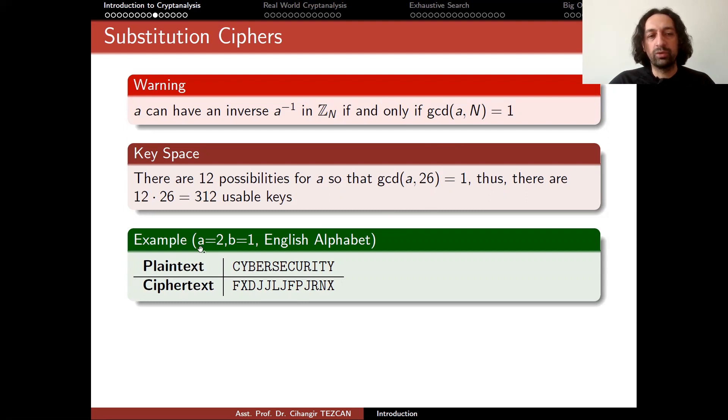Let me show you an example when a is chosen such that the greatest common divisor with 26 is not 1. In this example, I chose a equals to 2. You can see that greatest common divisor of 2 and 26 is actually 2, not 1. So in this case, a doesn't have an inverse. What can be the problem when we perform encryption in this way? As you can see, I again encrypted the cyber security plaintext with these parameters. But as you can see, the letter E and the letter R is encrypted to the same letter J. So the person who obtained the ciphertext, when they tried to perform the decryption operation, they would not be able to guess what J is going to be. It can be E or R. This is why you have to choose a in a meaningful way.